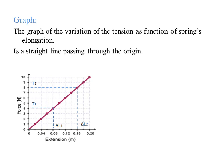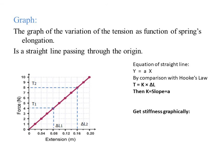From math, the equation of a straight line passing through the origin is y = ax. By comparison with Hooke's law T = K × ΔL, then K equals the slope equals a. We can find the slope graphically using this graph: slope = (T₂ - T₁)/(ΔL₂ - ΔL₁). We can take any two points lying on this graph.